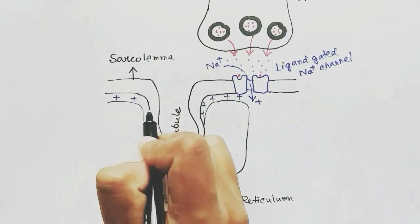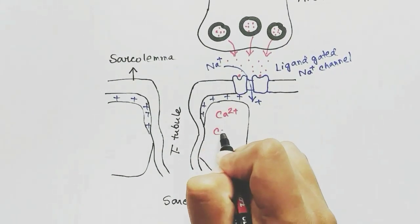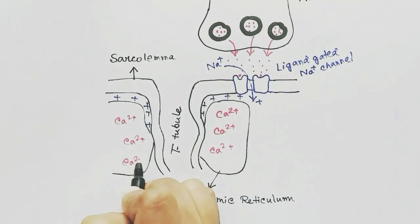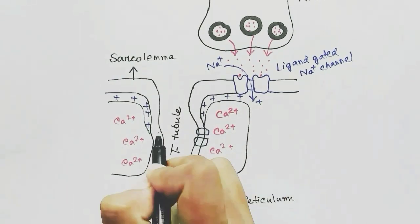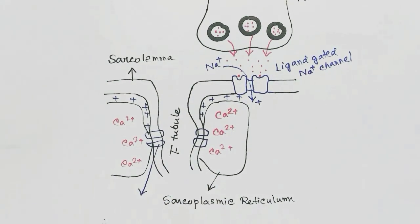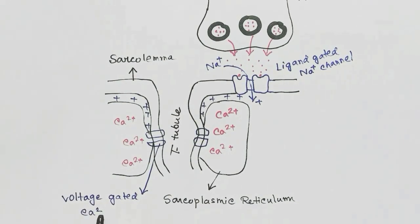The action potential arrives at the muscle. Calcium is stored in the sarcoplasmic reticulum. There are channels which connect the sarcoplasmic reticulum and the T-tubule. These channels are voltage-gated calcium channels. When the action potential arrives, that is when the positive charge arrives, the channels are opened.